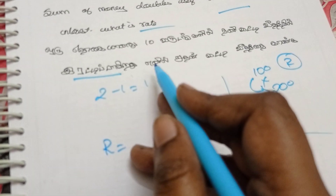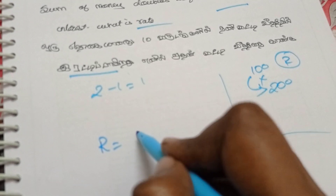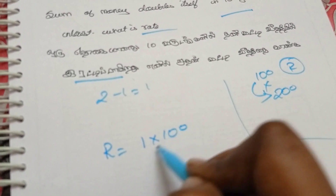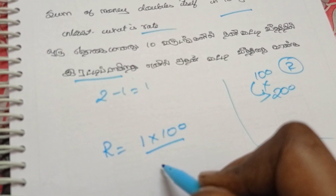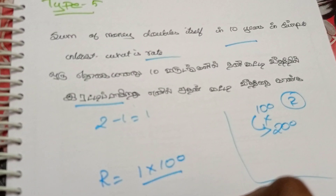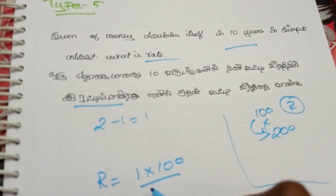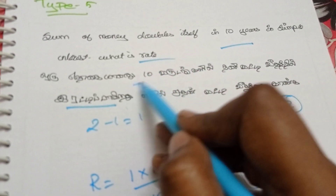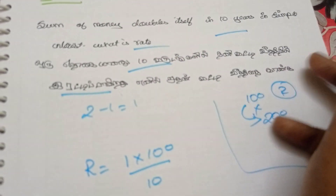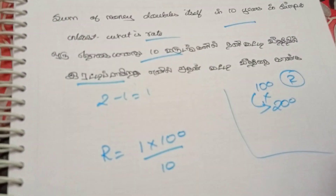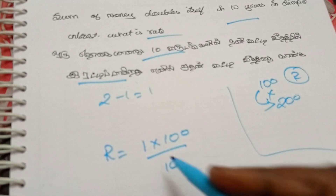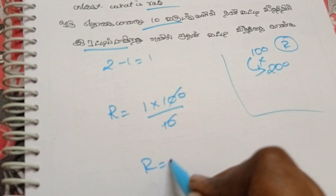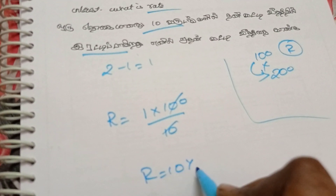We need to write the rate equal to 1 into 100 divided by the time. The rate is equal to 10%. So the rate of interest is 10%.